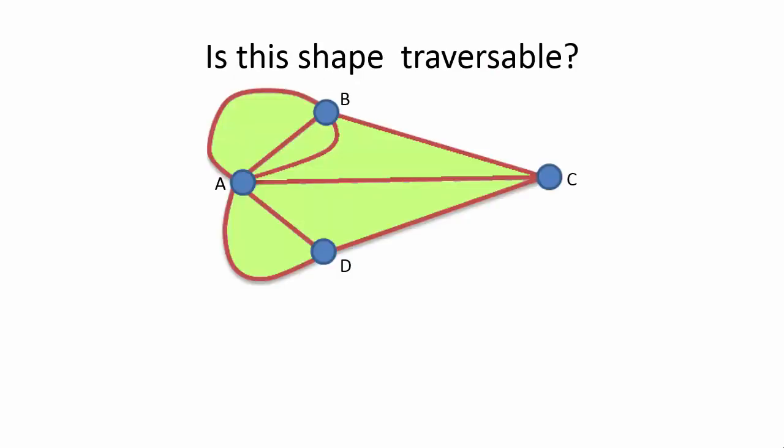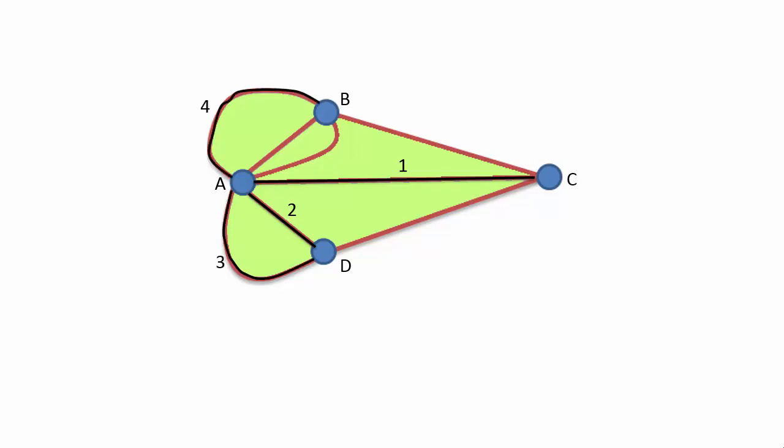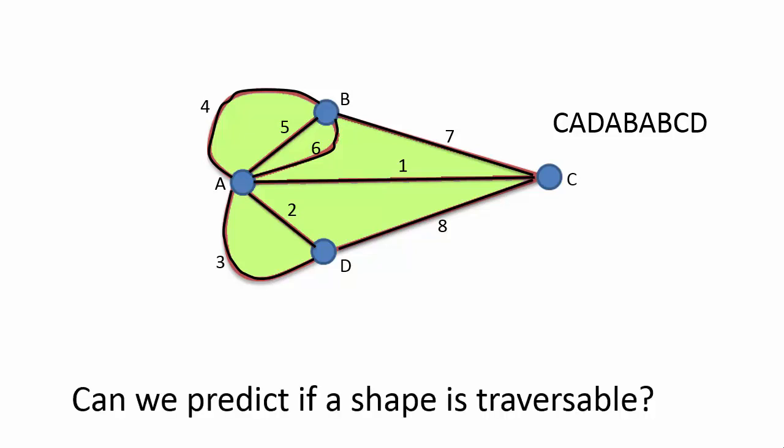We're going to look at several shapes first to see if they are traversable. Is the first one—what do you think, is this one traversable? It is, and here's one way of showing that. We go from C to A, then from A to D, D back to A, A to B, B to A, B to C, and finally C to D. Another way of showing that path is to use the letters of each vertex, as you can see there.